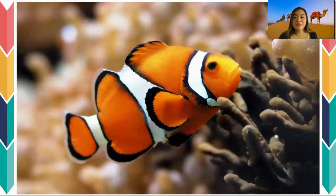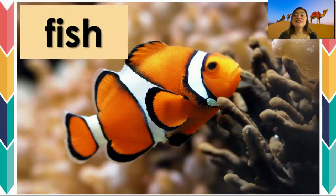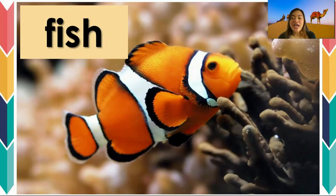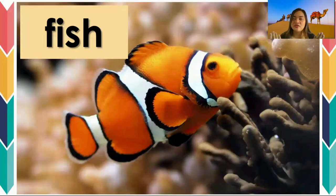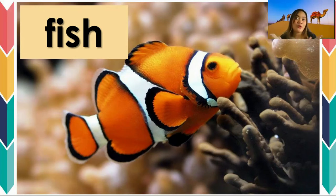Everybody loves this animal. What animal is it? It's a fish. It is a fish. How do you spell fish? F-I-S-H. You already know there are a lot of fish — different kinds of fish. This one is very famous because we call this one Nemo, like we saw it in a movie.